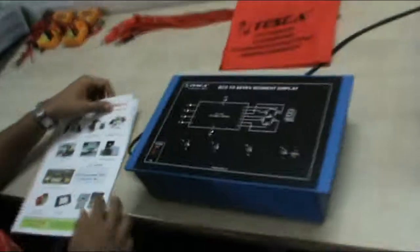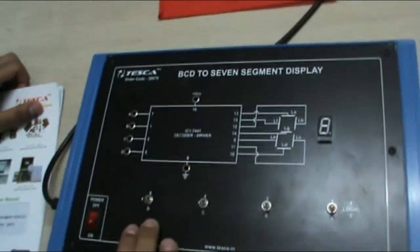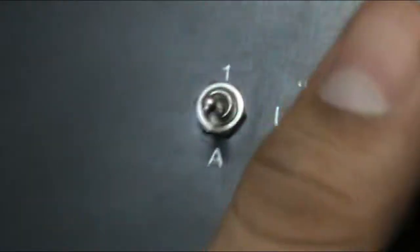Now this is our equipment. In this we have 4 inputs: A, B, C and D. These are the 4 switches in which the above is logic 1 and the below is logic 0. This is a 7 segment display. In this we can have numbers from 0 to 9.